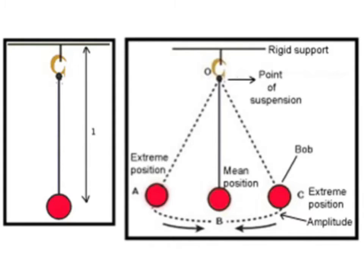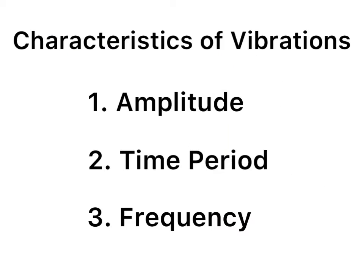the ball goes from left to right for a few times before coming to rest at its initial position. When a pendulum goes from O to A, then A to O, then O to B and then back from B to O, it is said to have completed one oscillation and every vibration has three characteristics: amplitude, time period and frequency.